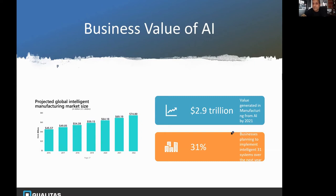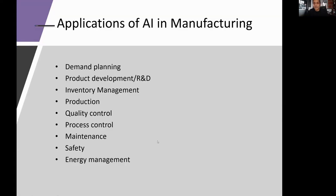About 30% of manufacturing companies were planning to implement intelligent systems within a year — so by 2020, roughly one in three industries were adopting some form of AI. Compare that to robotics, where penetration is around 8%. With AI, penetration is projected to reach the high 90s by 2030, meaning virtually every industry will be using AI in some form.